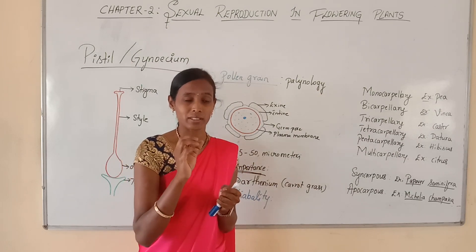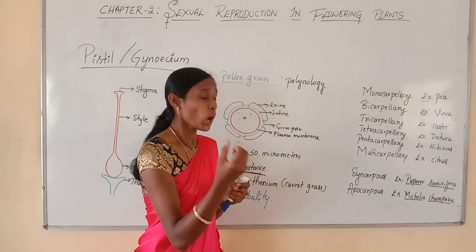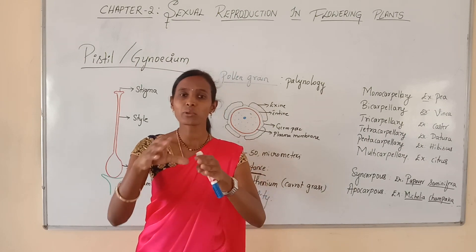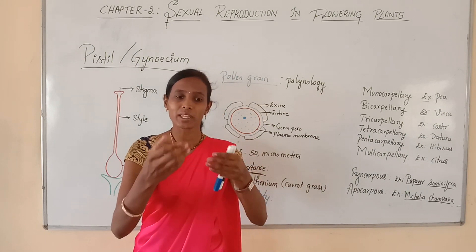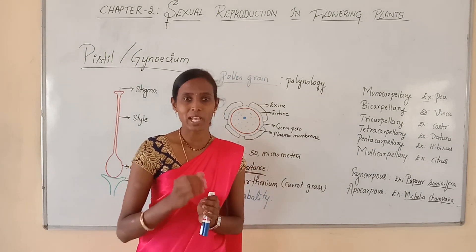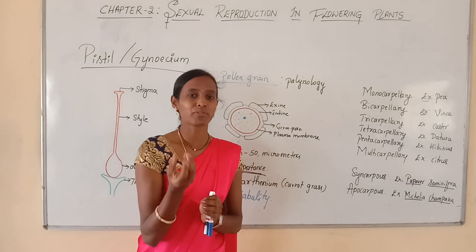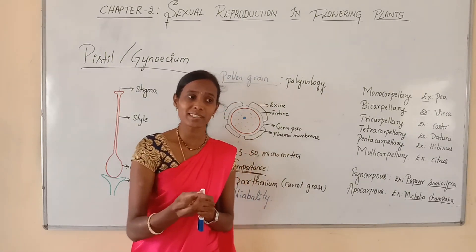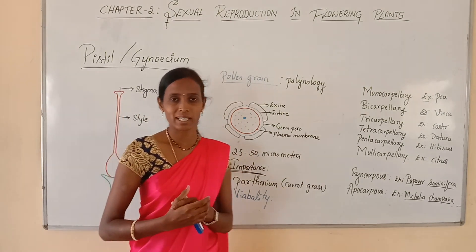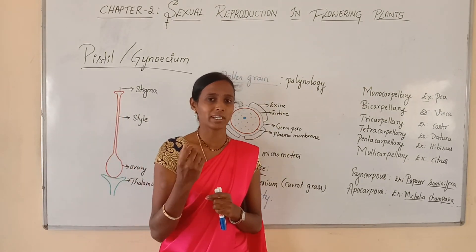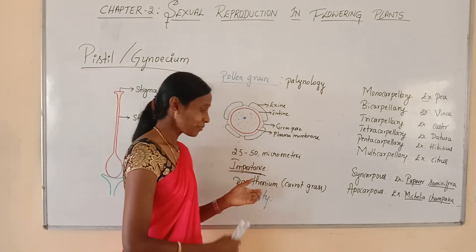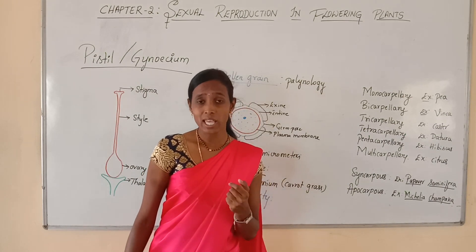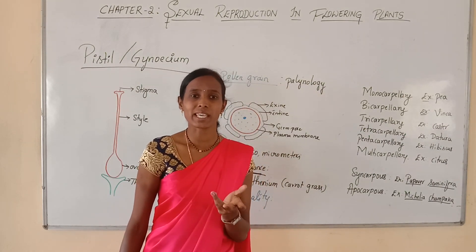Within 30 minutes, wheat and rice pollen grains lose their viability, so they have to fall onto the stigma and bring about fertilization. Otherwise, fertilization cannot occur in plants like wheat and rice. In contrast, in some other families like Rosaceae, Leguminaceae, and Solanaceae, pollen grains can maintain their viability up to several months.